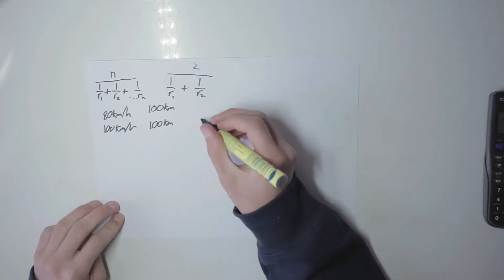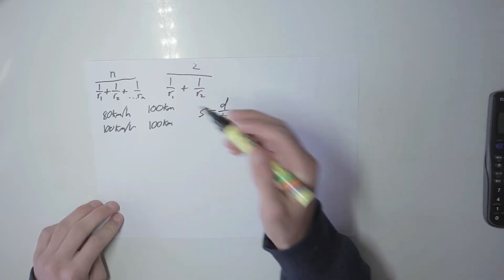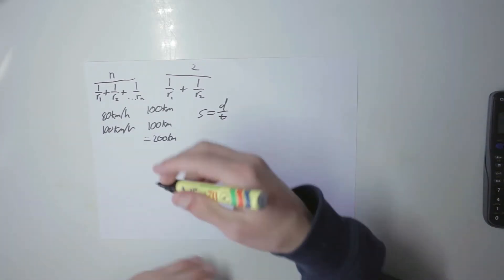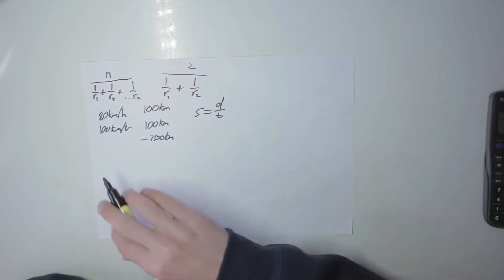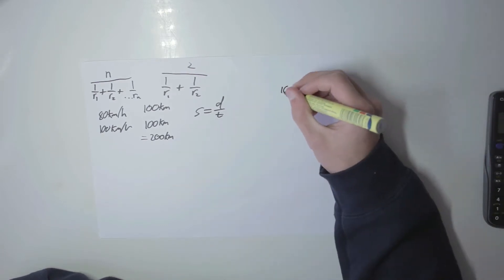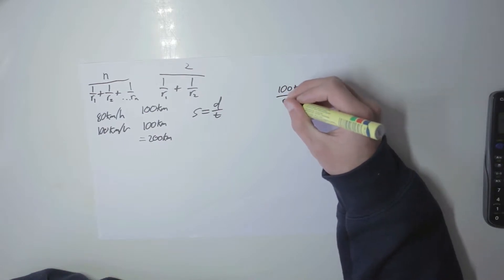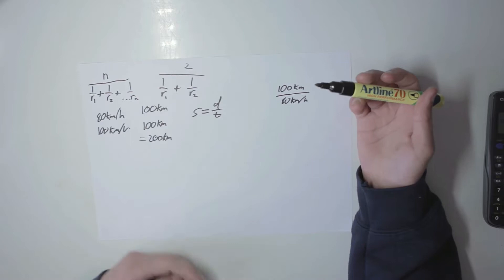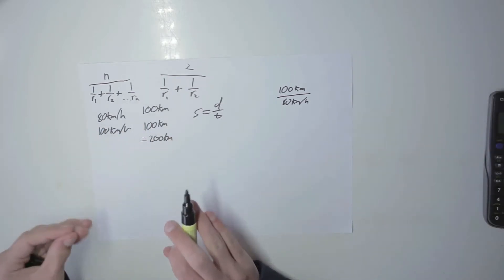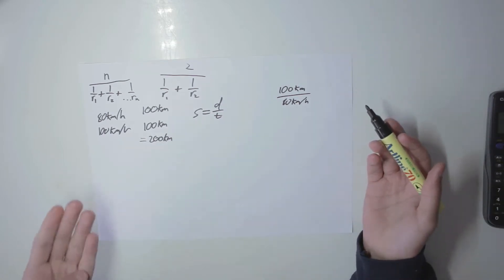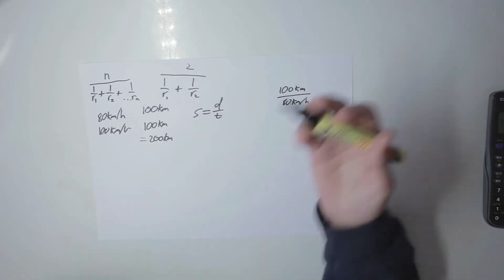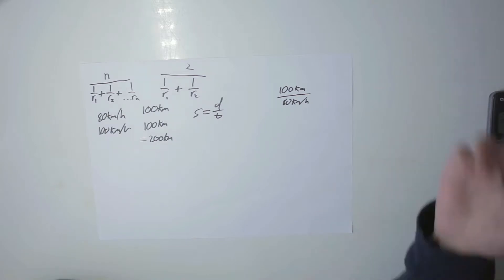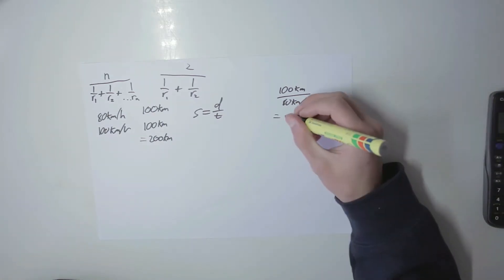We want to figure out the average speed of the trip. Average speed is distance divided by time. We know the total distance — we can just sum that up. For time: 100 kilometers divided by 80 kilometers per hour gives us 1.25 hours. If you're going slower, it'll take you more than one hour, which makes sense intuitively. Dimensional analysis — looking at the units and canceling — also confirms this.